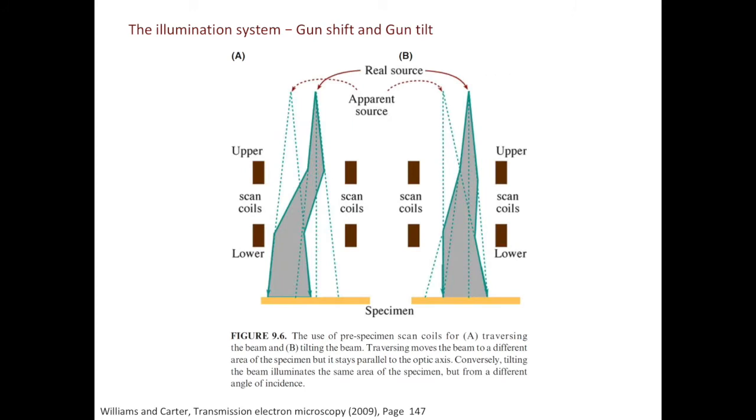The last thing I want to talk about in this video is the Gun Shift and Gun Tilt. If the alignment is not right, the beam can be bent a few times, and the physical location of the source is different from where it appears to be. Such artifact can also lead to the illusion that the beam comes in at an angle instead of coming straight down.